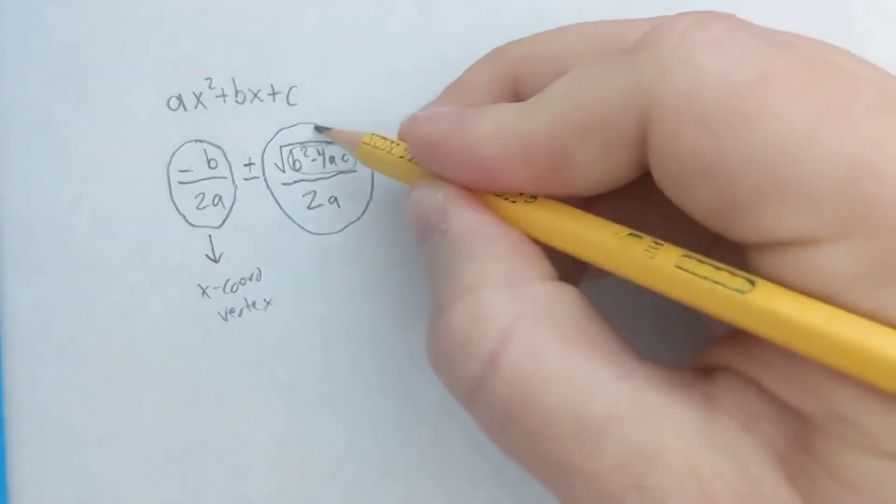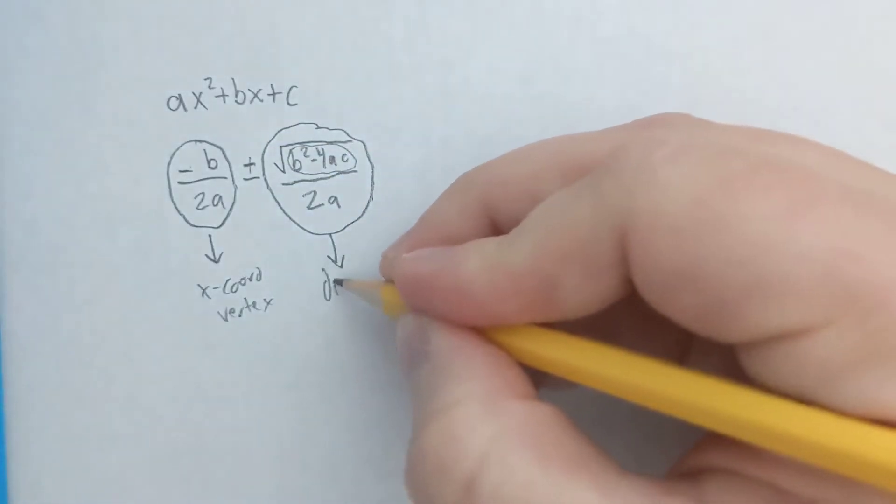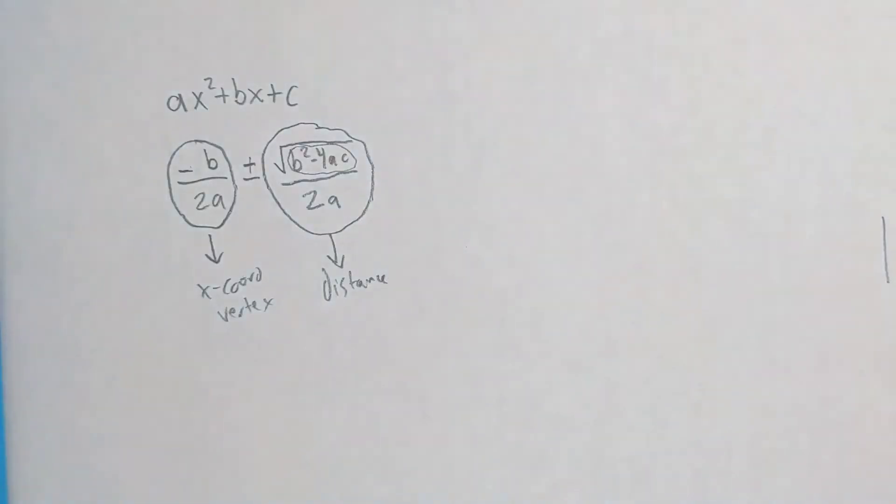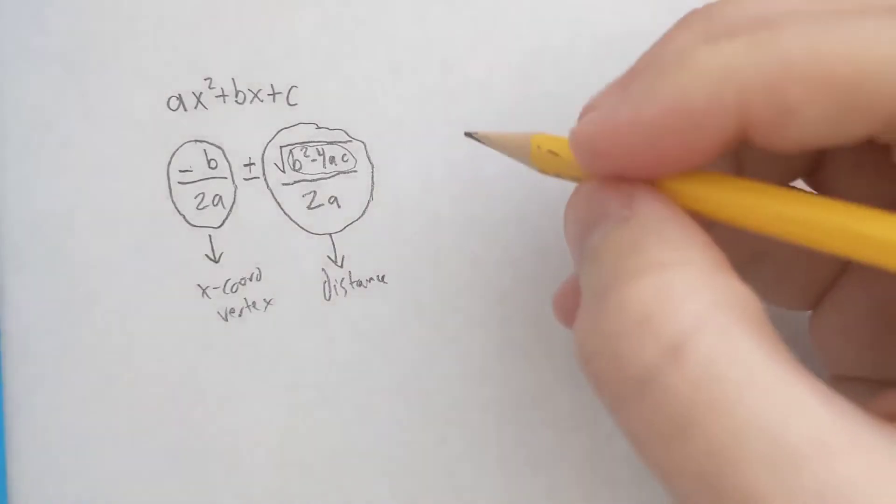And this part over here is maybe less familiar, but it's the distance that you would travel from the x-coordinate in order to reach a root. I'm going to give you a few examples here.